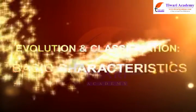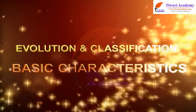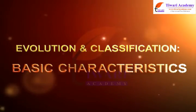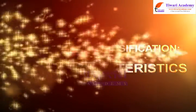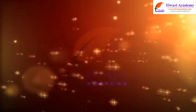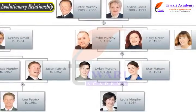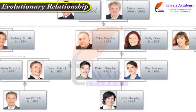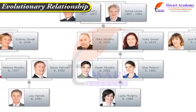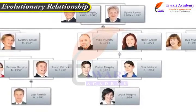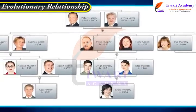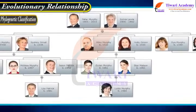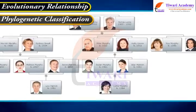Evolution and classification: basic characteristics. The modern system of classification is based on evolutionary relationships, and due to this, it is also known as phylogenetic classification.